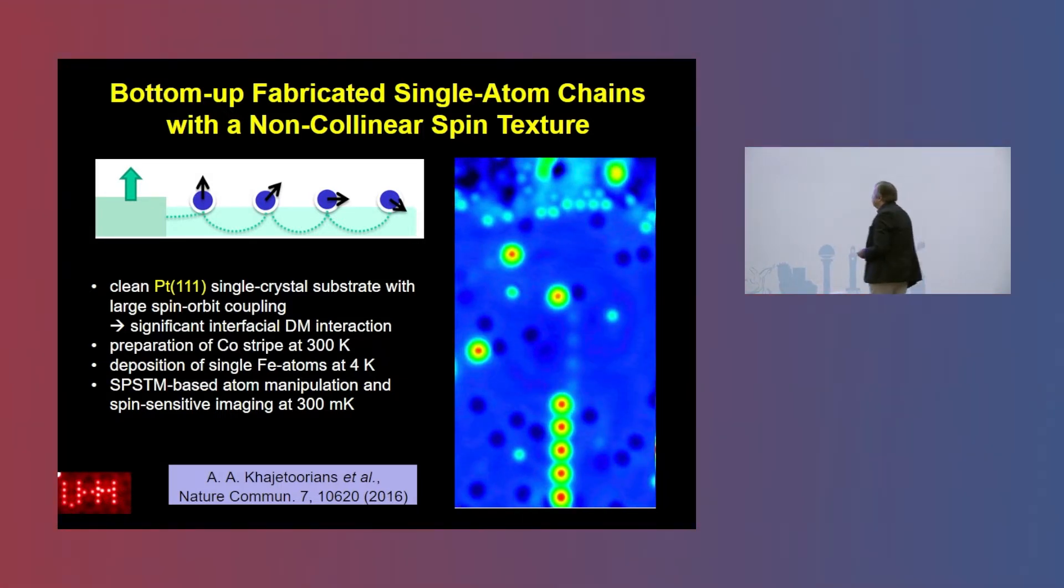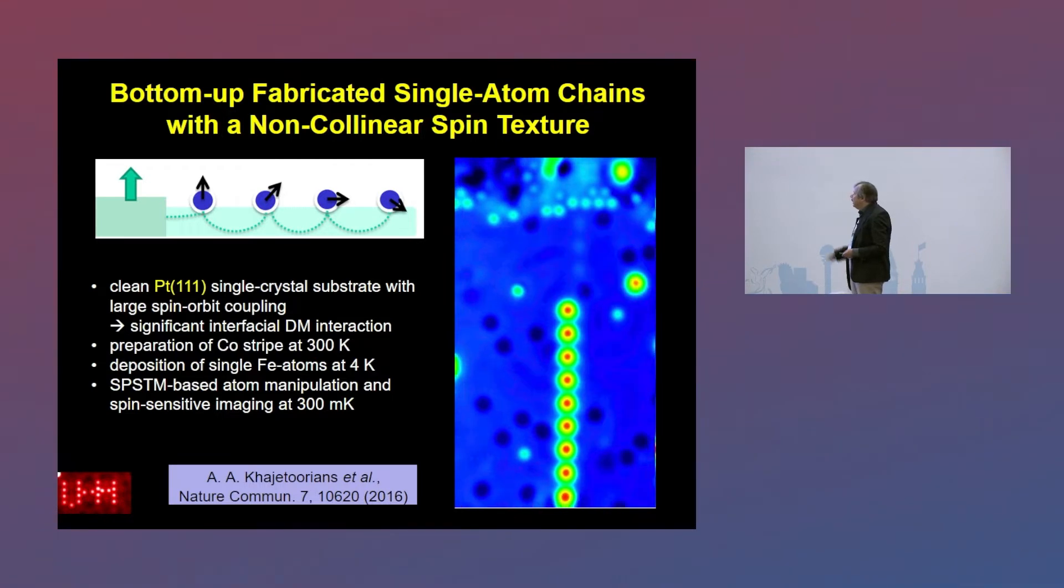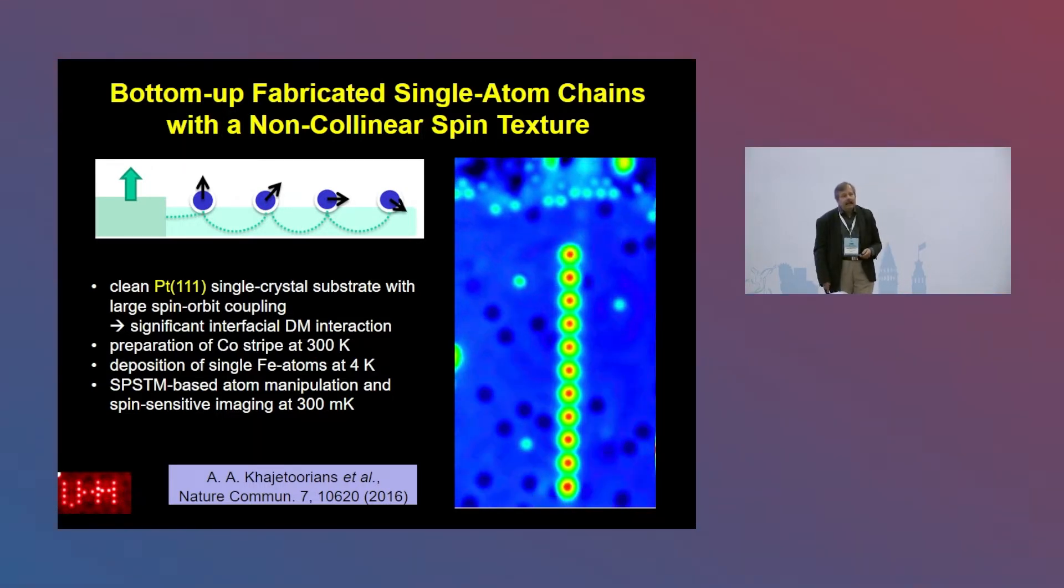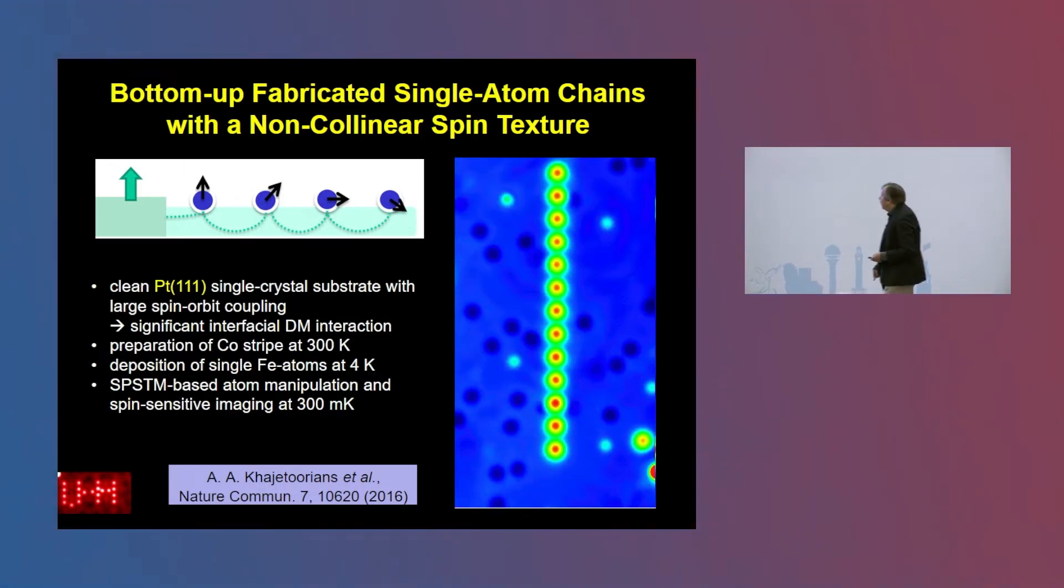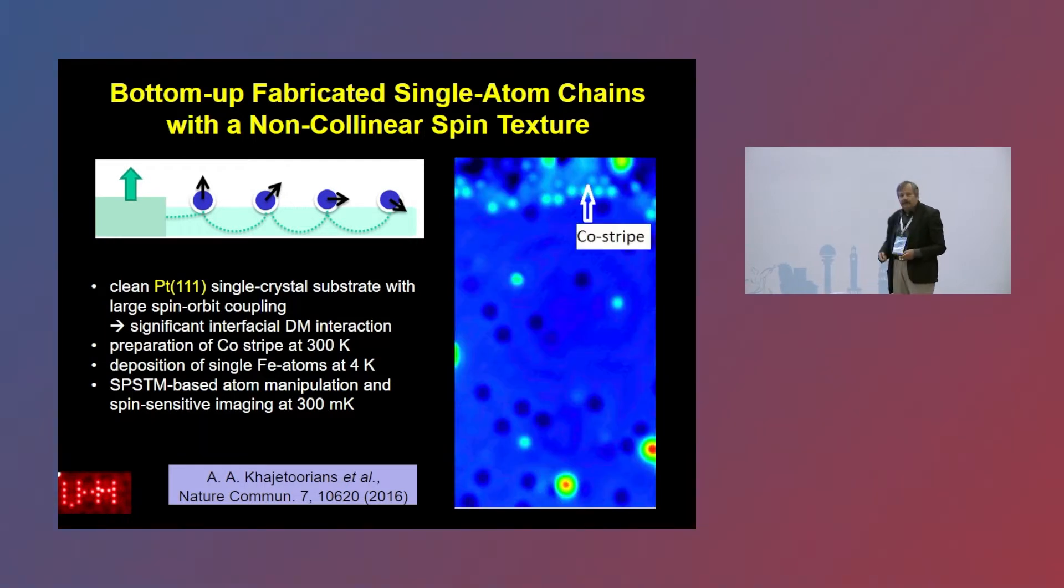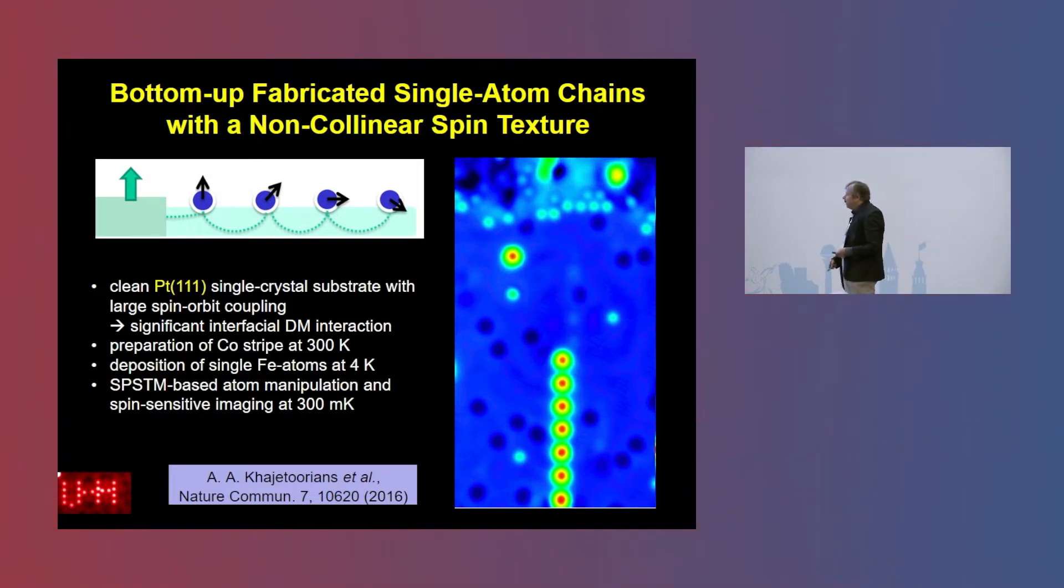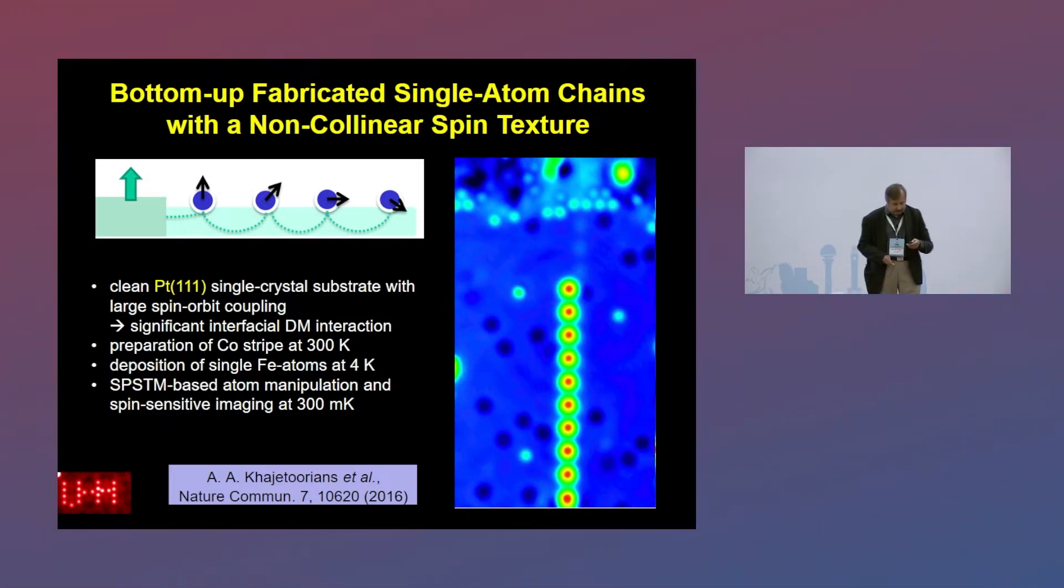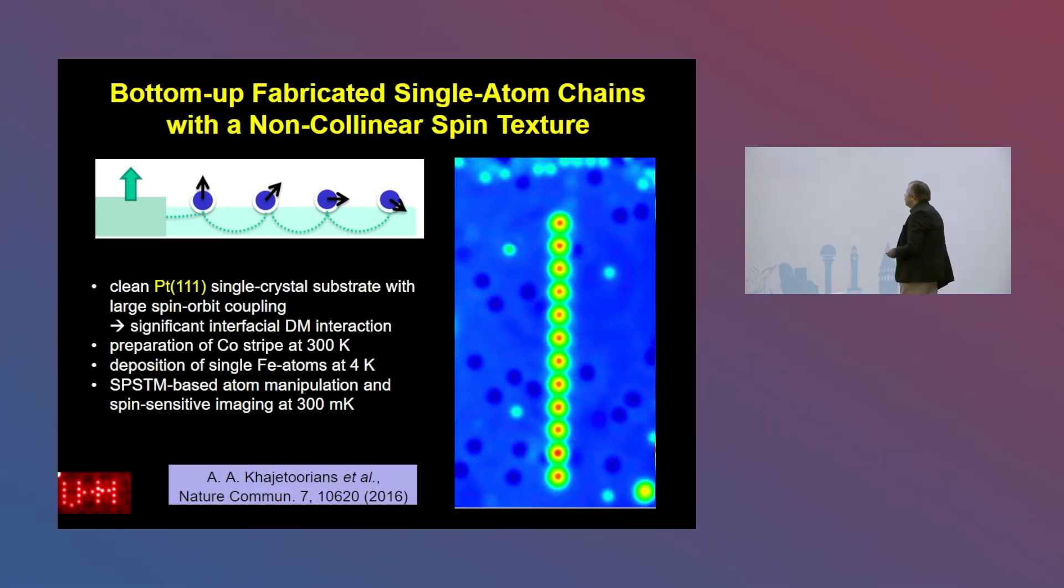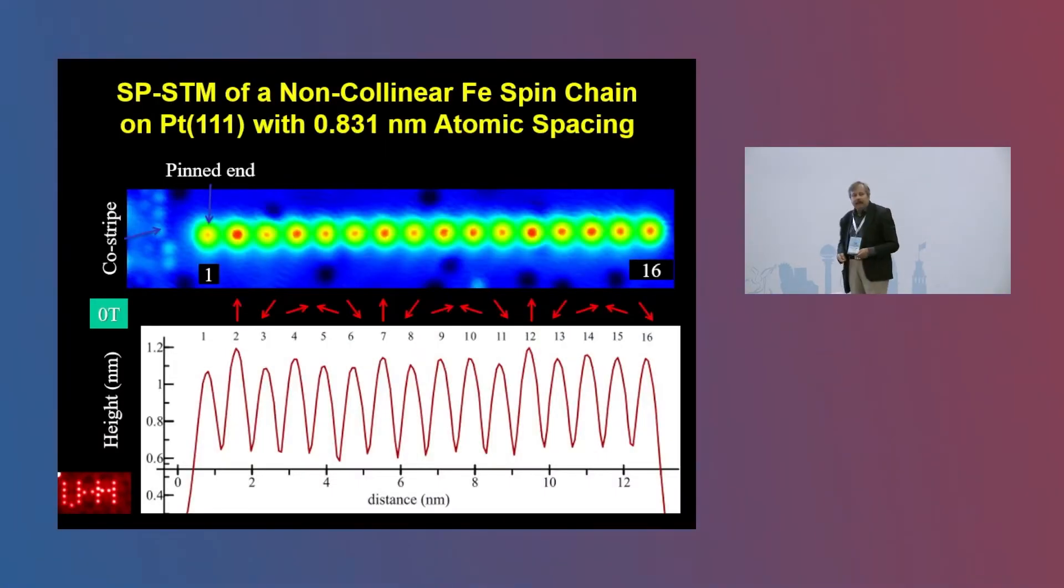And that has an influence actually on the spin texture of this chain because as we will see we will not have a typical collinear state as we would expect for iron but we have a non-collinear state. So the beauty is that we cannot only do atom manipulation with the help of a scanning tunneling microscope tip but we can also perform spin resolved imaging on the atomic level.